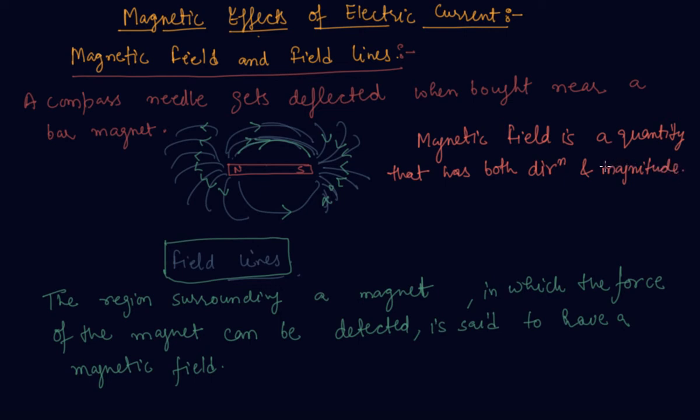The direction of the magnetic field is taken to be the direction in which a north pole of the compass needle moves inside it. The direction of the field is taken to be the direction in which this north pole comes inside it.